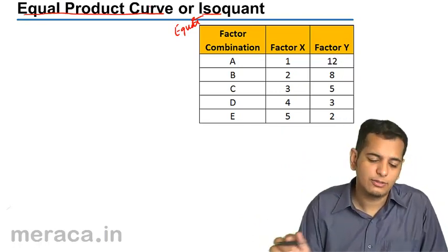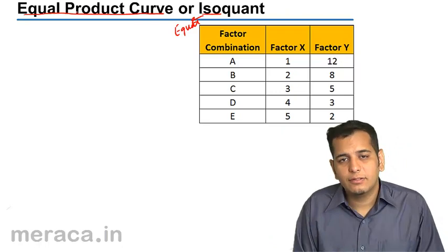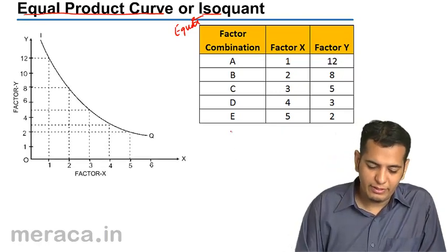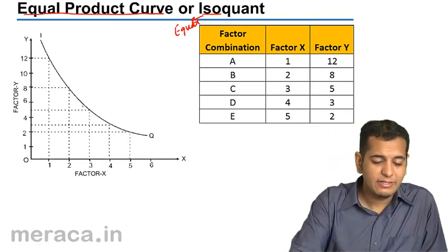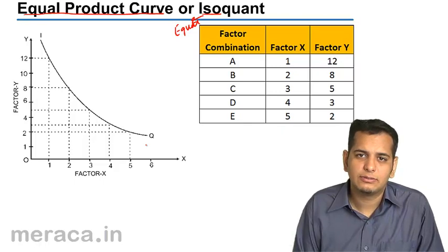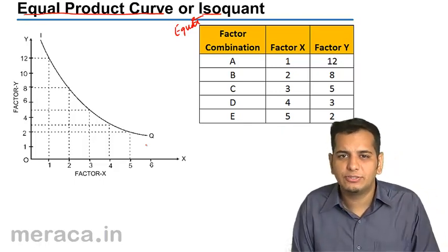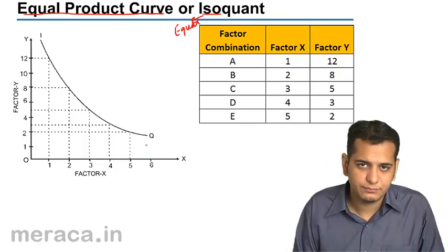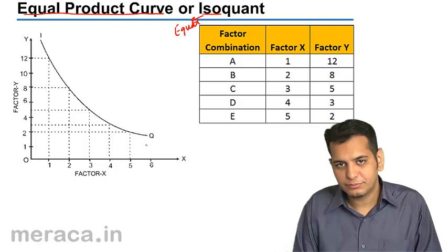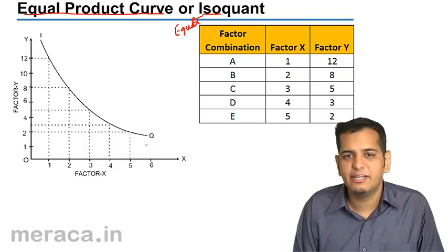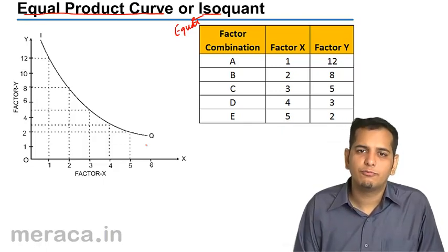This curve is similar to indifference curves, wherein the indifference curve gave us the equal level of satisfaction and showed us different combinations of two goods whose consumption gives equal satisfaction. Similarly, isoquant curves show us the combination of two factors of production that will give the equal level of production or equal level of output.